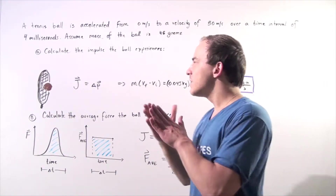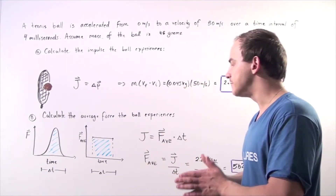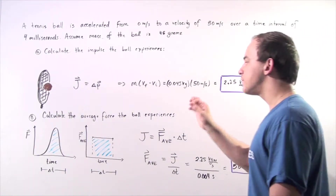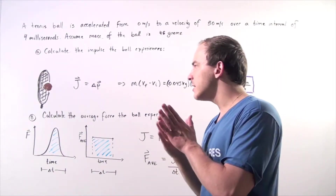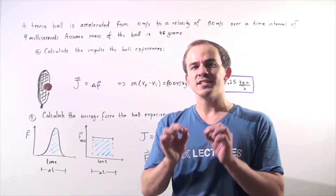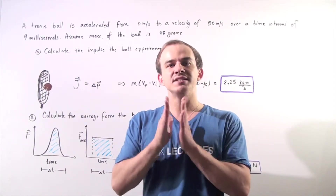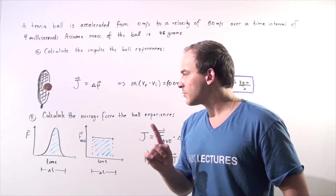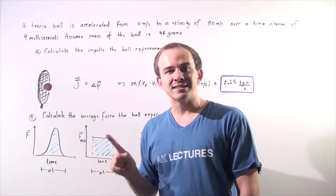That's exactly why the object experiences a change in velocity. Using this value, we can calculate the average force that the ball experiences. Before the collision takes place and after the collision takes place, there is no physical force acting on the object because they're not physically touching. So the actual force before and after collision is zero. But the actual force during the collision is non-constant.